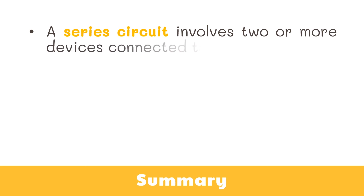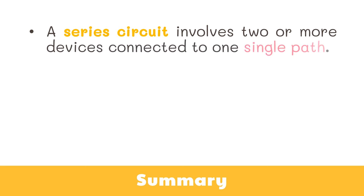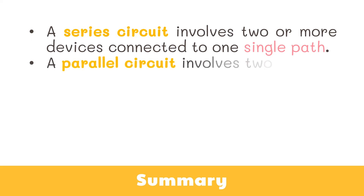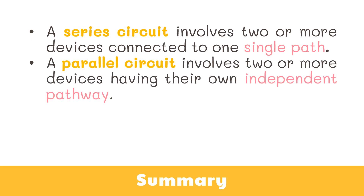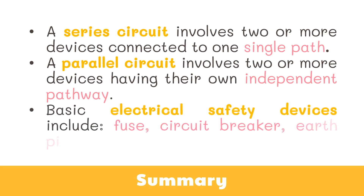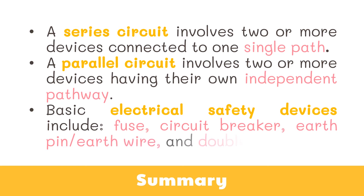To wrap things up: a series circuit involves two or more devices connected to one single path, while a parallel circuit involves two or more devices having their own independent pathway. Basic home electrical safety devices include the fuse, circuit breaker, earth pin or wire, and double insulation.